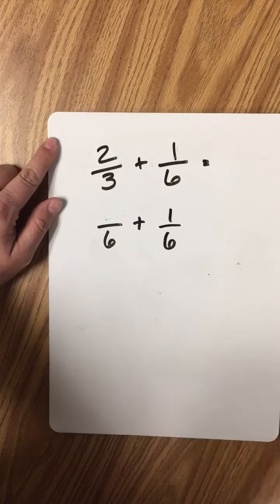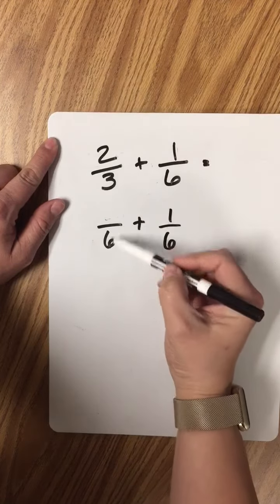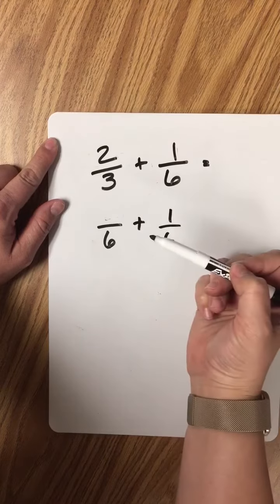2 thirds is not the same as 2 sixths. It's a different fraction. You're like, well, then what do I do? Well, to go from 3 to 6, you have to multiply by 2.